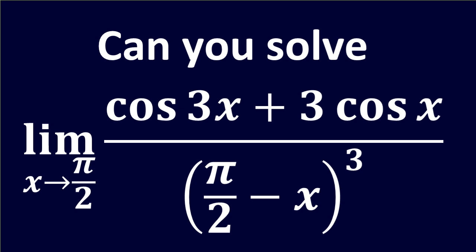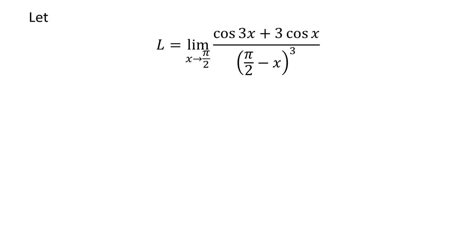In this video, we will learn to find the limit of cosine of 3x plus 3 times cosine of x upon cube of (π/2 minus x) as x approaches π/2. Let us assume L is the limit of cosine of 3x plus 3 times cosine of x upon cube of (π/2 minus x) as x approaches π/2.